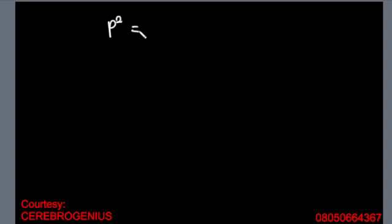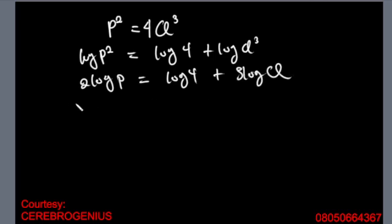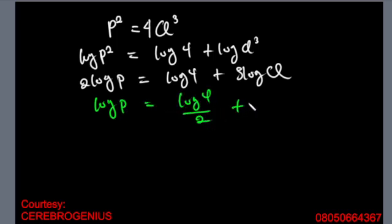Let's try another one. Say we have p² = 4q³. We are going to have log p² = log 4 + 3 log q, which becomes 2 log p = log 4 + 3 log q. Now you know that our y doesn't have any coefficient, so we divide everything by 2. This becomes log p = log 4 over 2 + 3 log q over 2.